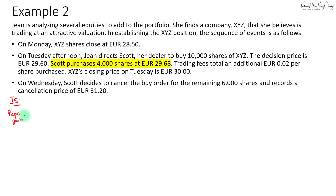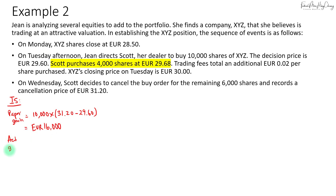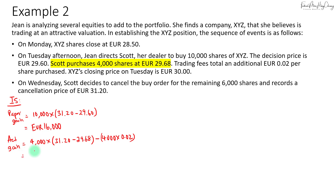When calculating the implementation shortfall on a total basis, the paper gain is based on the 10,000 shares you wanted to buy. The closing price is 31.20 and the decision price is 29.60, giving a paper gain of 16,000 euros. The actual gain is 4,000 shares multiplied by the ending price of 31.20 minus the purchase price of 29.68, then minus commissions of 4,000 shares times 2 cents, giving an actual gain of 6,000 euros.